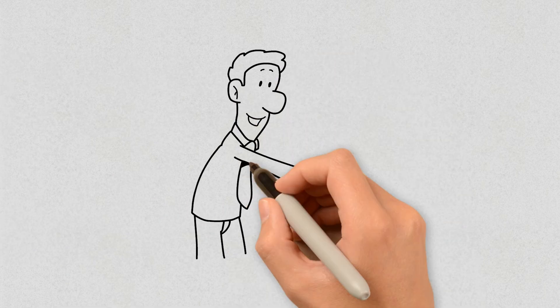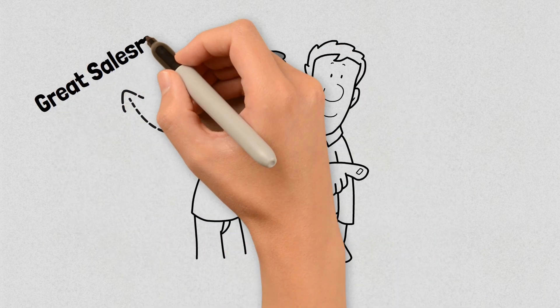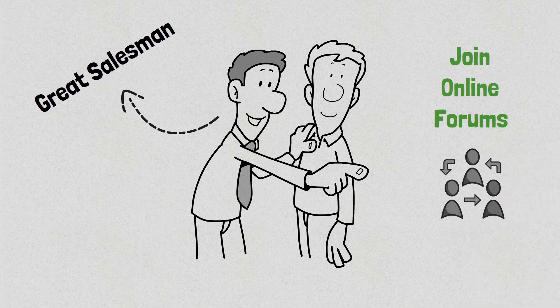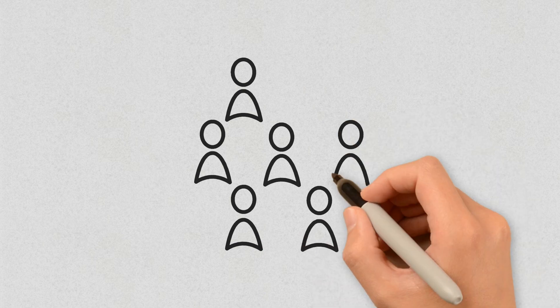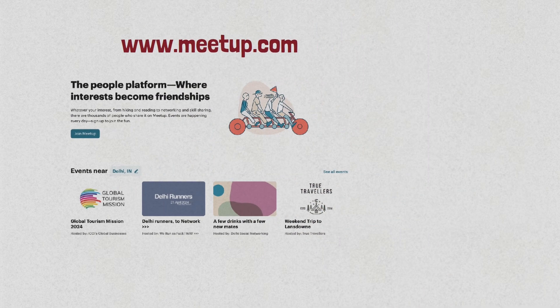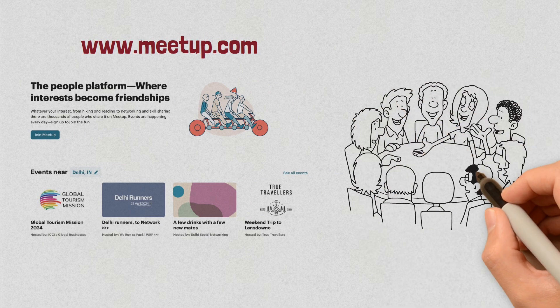This is where the power of networking comes in. People with great networks often tend to be great salesmen. You can start by joining online forums and communities regarding your interests. But increasing your real-life network is super important to get opportunities like the person we talked about. This is where sites like meetup.com come in, where you can find physical events and meetups happening around you by people having similar interests.